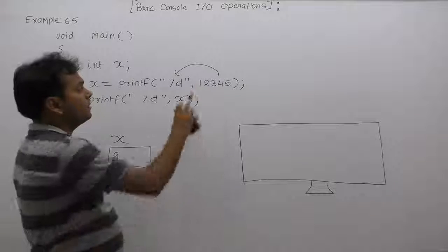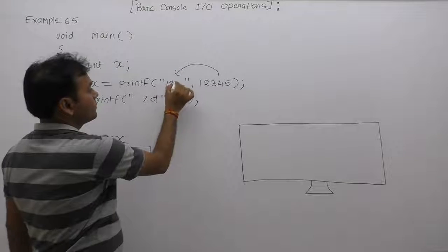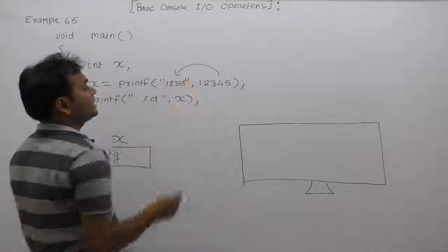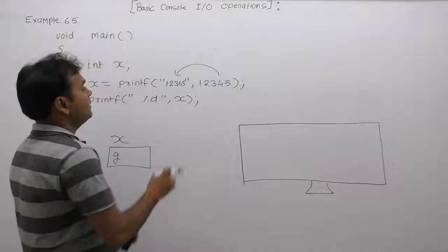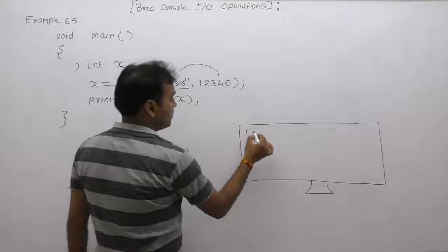It is similar to like that. Finally, this printf function will print 12345 on the monitor.